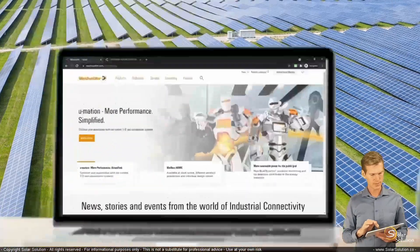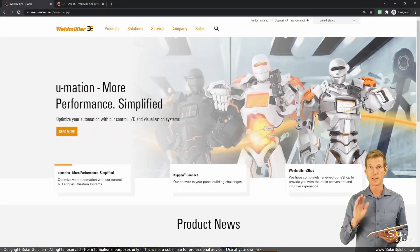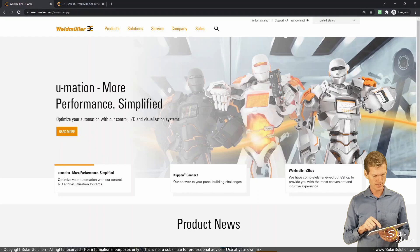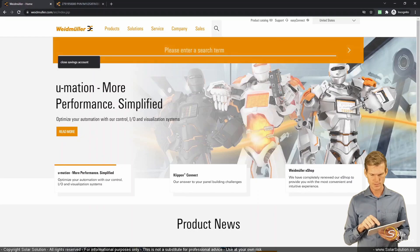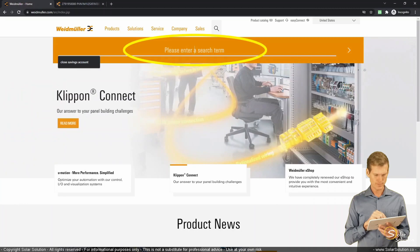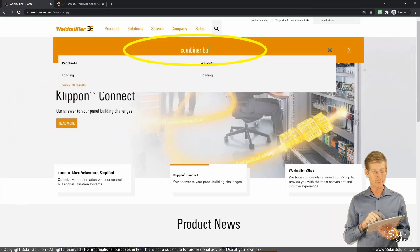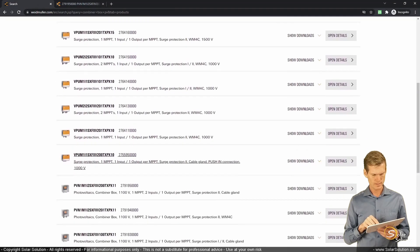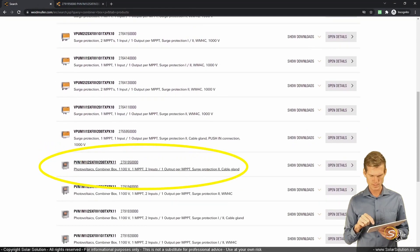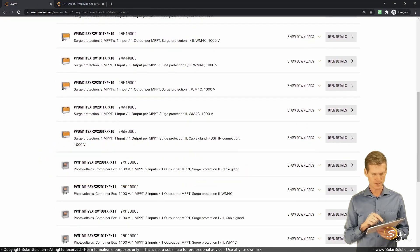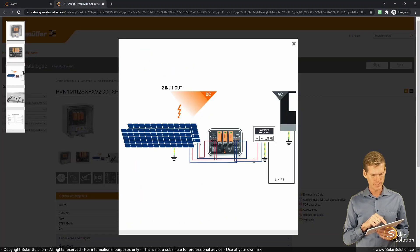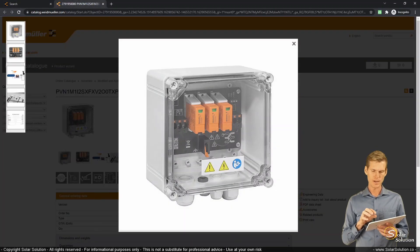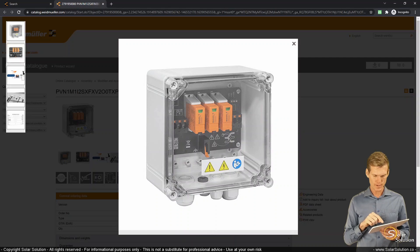For this exercise, I'm going to Weidmuller.com. I am not affiliated with Weidmuller. Let's go to the search box and search for combiner box PV. We've got a whole range of products available here. Let's go for this one, just to show you an example.